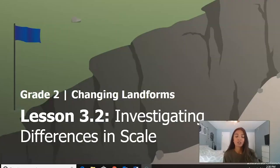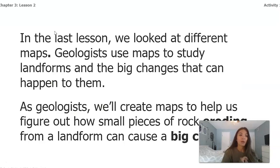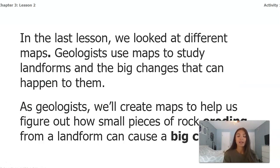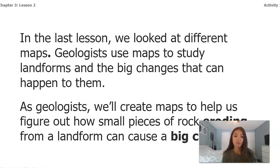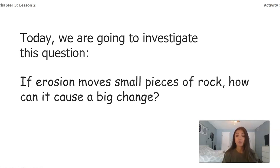Hi second graders and welcome back to our Changing Landforms unit. Today we are going to be focusing on chapter three lesson two, which is investigating differences in scale. In the last lesson we looked at a couple of different maps. Geologists use maps to study landforms and the big changes that can happen to them. As geologists, we'll create maps to help us figure out how small pieces of rock eroding from a landform can cause a big change. Today we're going to investigate: if erosion moves small pieces of rock, how can it cause a big change?